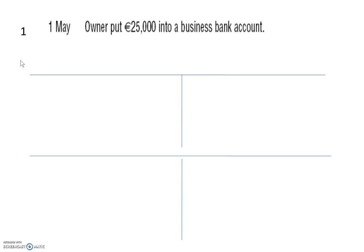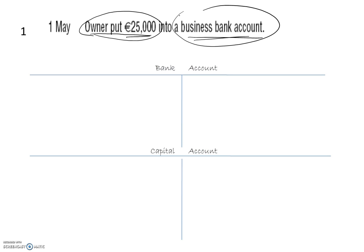1st of May: the owner put 25,000 into a business bank account. To record this transaction we need two accounts. One account represents the fact that the owner has put money in — that is called capital — and the other is the business bank account. So we need a bank account and a capital account. One account we are going to debit — debit is on the left hand side — and the other account we are going to credit on the right hand side.